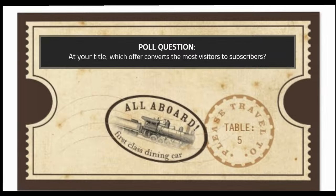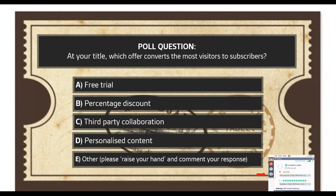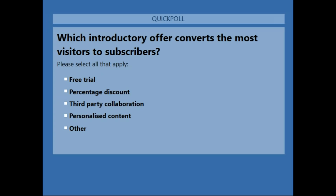We have a poll question for you. We've got hundreds of publishers and product owners on this webinar and we'd like to hear from you: what are the types of offers that are working best for you? Where have you had the highest level of customer uptake and acquisition? Please vote and participate in the poll, and if you can give us extra detail in the comments, we'd be fascinated to hear what third-party collaborations are working best for you.